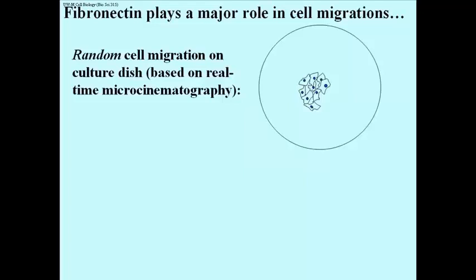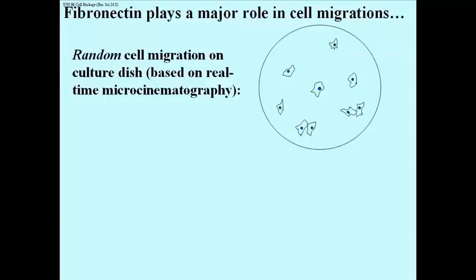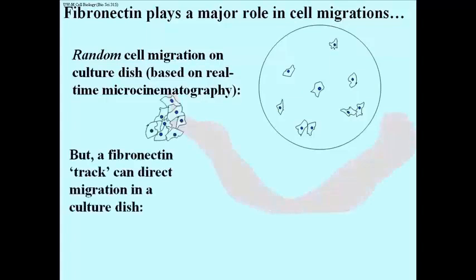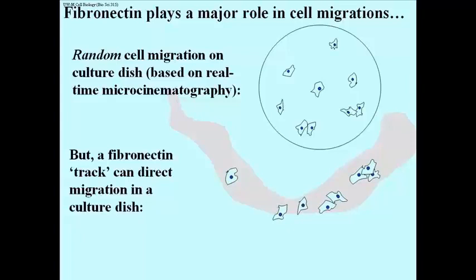If we take a bunch of cells and put them in a petri dish in liquid, and allow the cells to settle onto the surface, you can take real-time cinematography and watch the cells move around in a random fashion. On the other hand, if you take a solution of fibronectin and dip a paintbrush into it and paint a track along the surface in this petri dish, the track can actually direct the cells to migrate along the track, which is what I've just shown here.